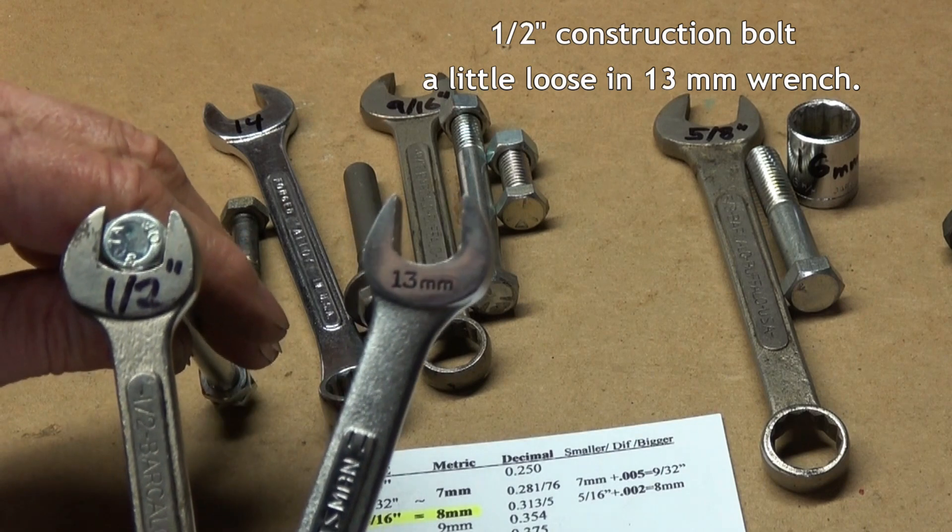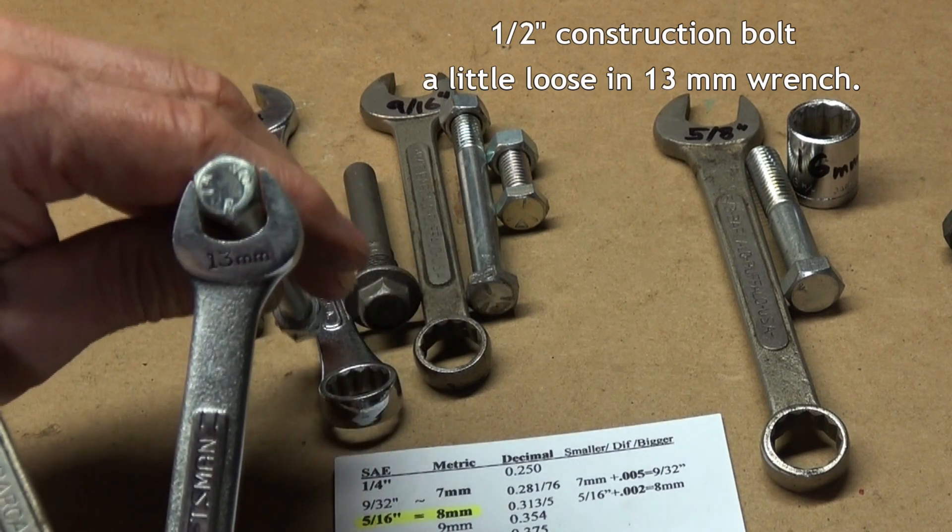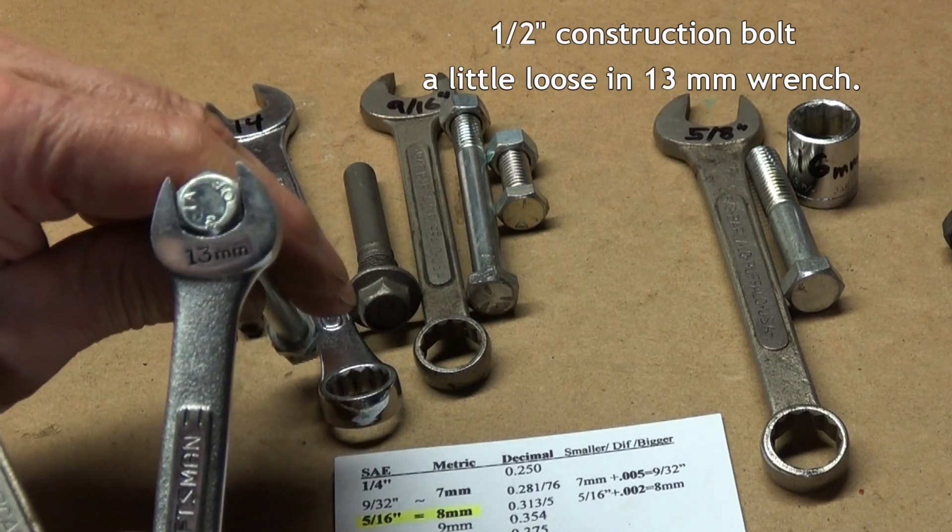This SAE construction bolt fits a half inch wrench. It's a little loose in the 13 millimeter.